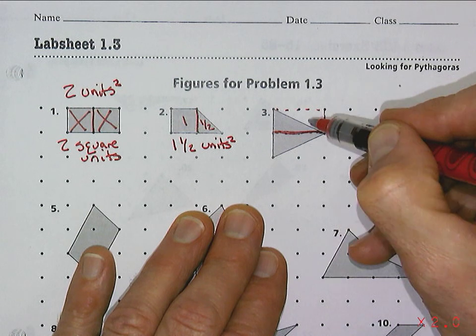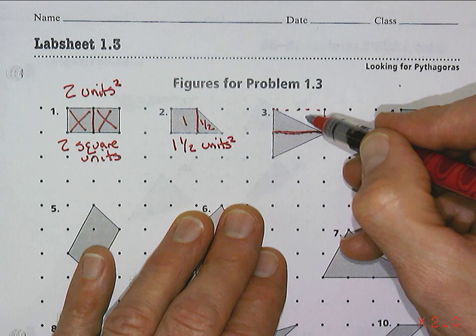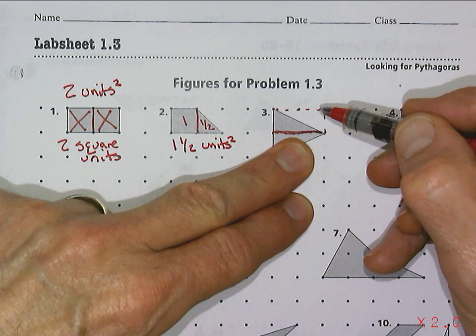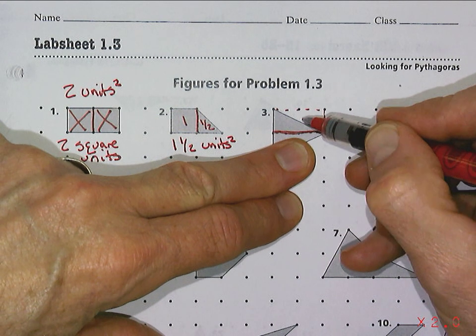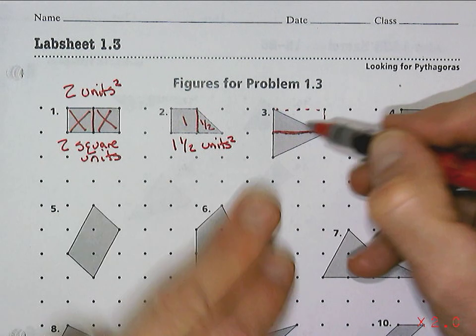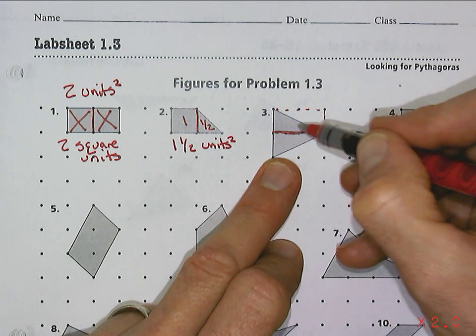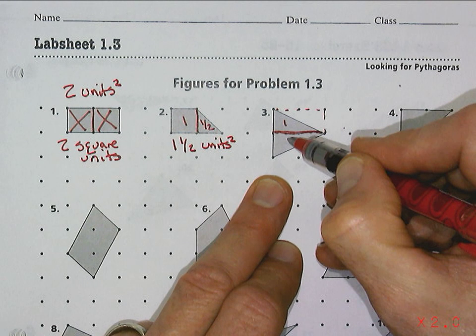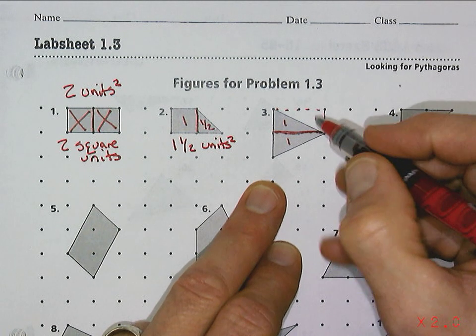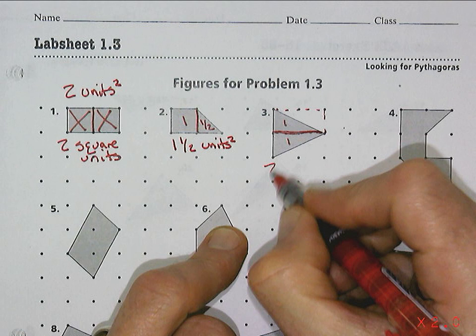If I took this triangle and put it into that space right there, then the number of squares it would cover would actually be two whole squares. So each half of this is one square unit, and this is one square unit, so together they make two square units.